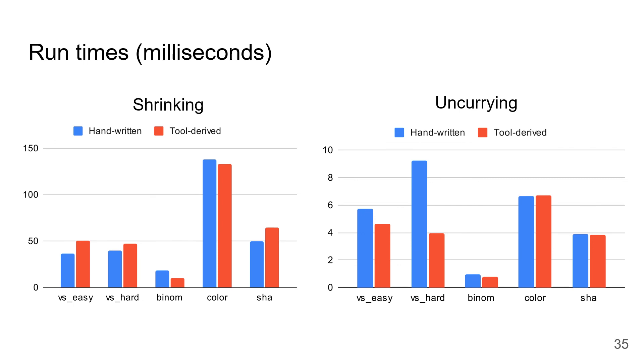Here are the runtimes, which basically show that our generated implementations are about as fast as their handwritten counterparts. Quick disclaimer here, there are a lot of details that I'm not going into in this comparison, and if you're curious about those details, please feel free to check out the relevant section of the paper.